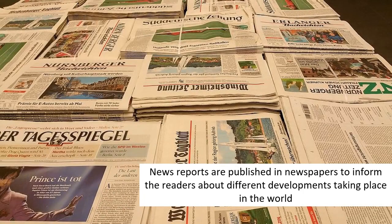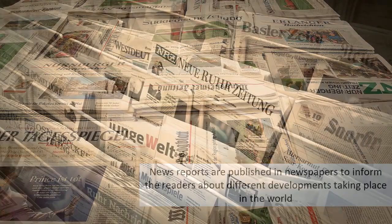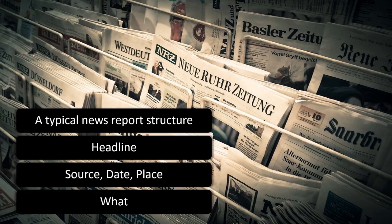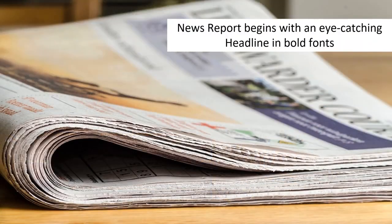News reports are published in a newspaper to inform readers about different developments taking place in the world. A typical news report has a structure comprising headlines, source, date, place and content. News reports begin with an eye-catching headline in bold font, followed by the source with day, date and place. The main body gives detailed reasons, and depending on the current importance, the length of the description may vary.